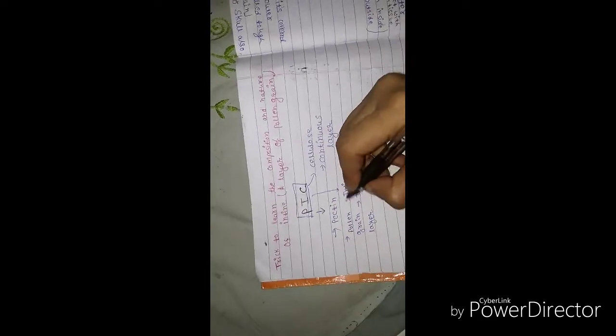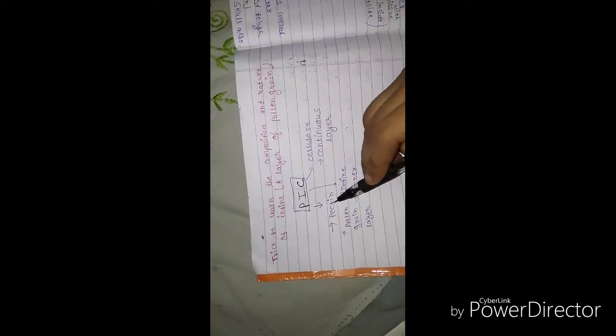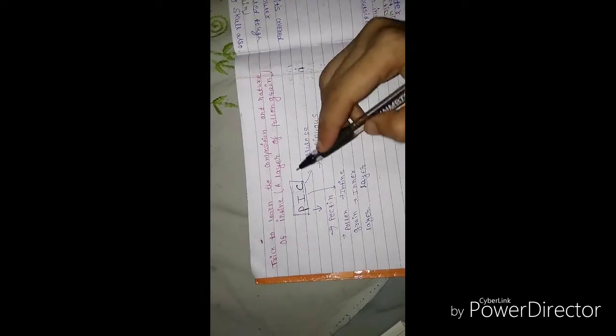First, let's see the composition. Pectin, cellulose. Intine is pectin and cellulose. What is intine? Pollen grains with pectin.